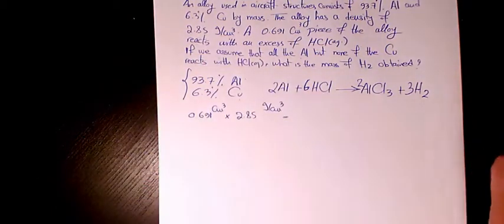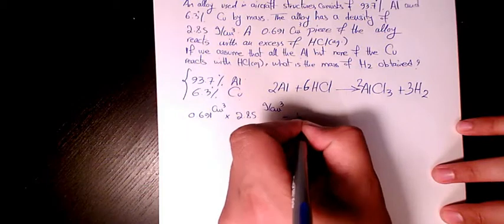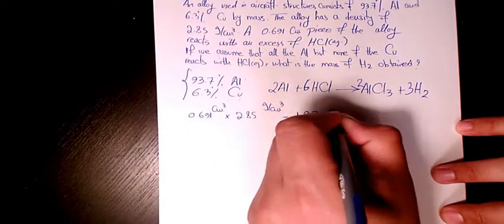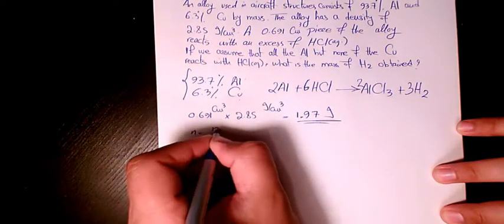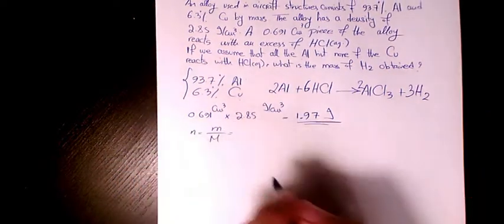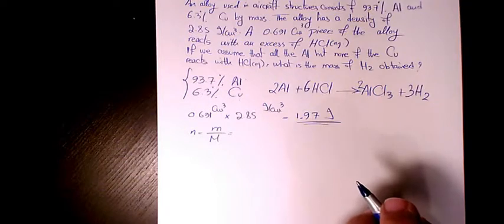If you multiply, it's going to be 1.97 almost grams of aluminum. Now I need to know the number of moles of aluminum, so we need to divide it by the atomic mass of aluminum.